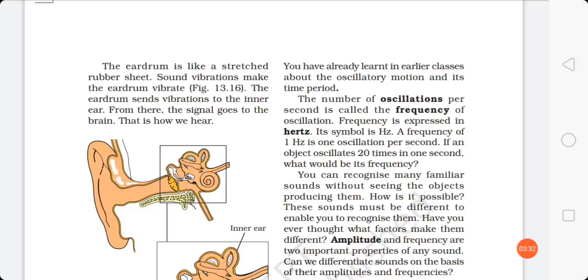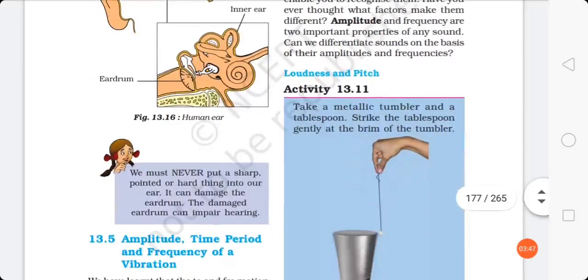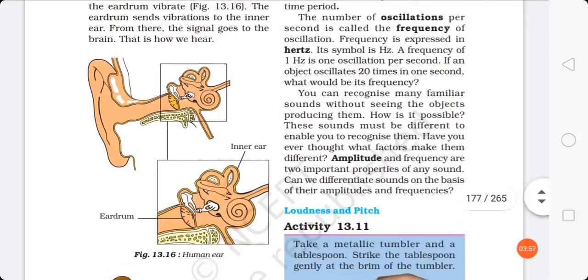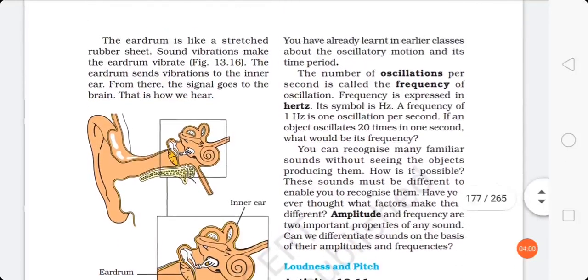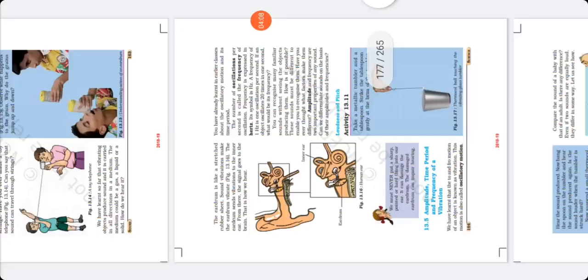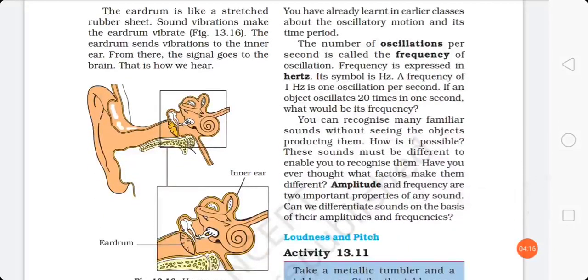Now in inner ear it is divided into various parts. From there the signal goes to the brain and that is how we hear. Here the various parts of human ear are shown, including the inner ear, eardrum and outer ear. These various parts of human ear and its working are explained here.